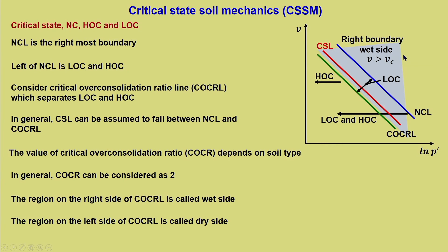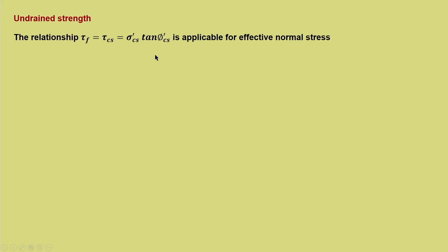On the wet side, specific volume V is greater than V_critical, and if less than that corresponding to COCRL it is the dry side. V_c can also be defined as the specific volume on the critical state line. Now let us look at undrained shear strength in the critical state framework. We know S_U is the undrained shear strength discussed in module 2, and we will see how it looks within this framework.